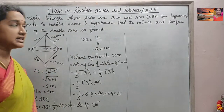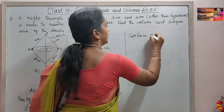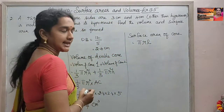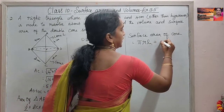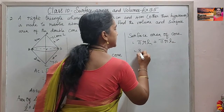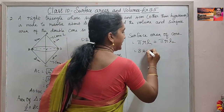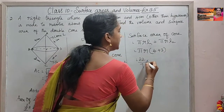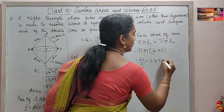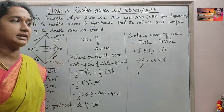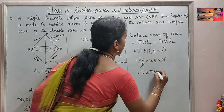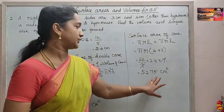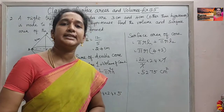Surface area of the double cone = πrl₁ + πrl₂ = πr(l₁ + l₂) = πr(4 + 3). Using π = 22/7 and radius = 2.4 cm: (22/7) × 2.4 × 7 = 22 × 2.4 = 52.75 cm². So the surface area of the double cone is 52.75 cm².